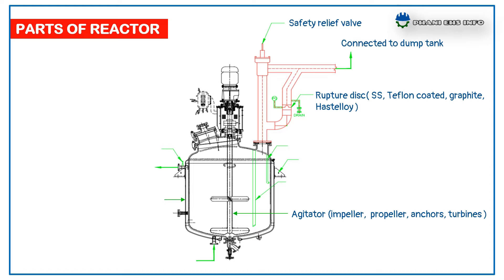Agitators are used for improved heat and mass transfer. There are different types of agitators: impellers, propellers, paddles, and turbines. Propellers are used in low to medium viscous liquids and low solid concentration slurries. Paddles are used to handle high viscous liquids and slurries. Turbines are best for gas-liquid reactions due to their radial flow patterns.